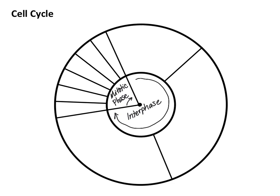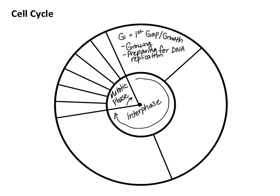We'll start with G1. The G1 phase is also known as the first gap phase — or as I like to call it, the first growth phase — because really what the cell is doing is growing and preparing for DNA replication. It is making the enzymes needed, gathering nucleotides, and gathering nutrients to ultimately make ATP, because we need all of these things for the next phase to occur.